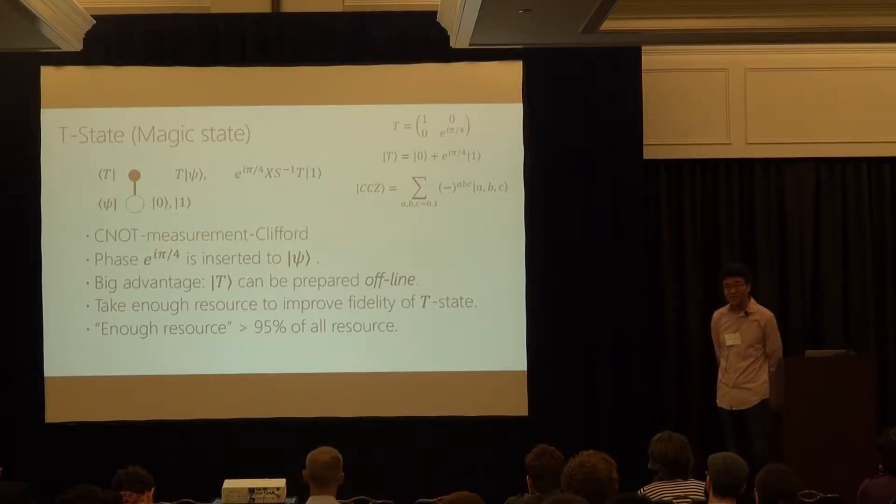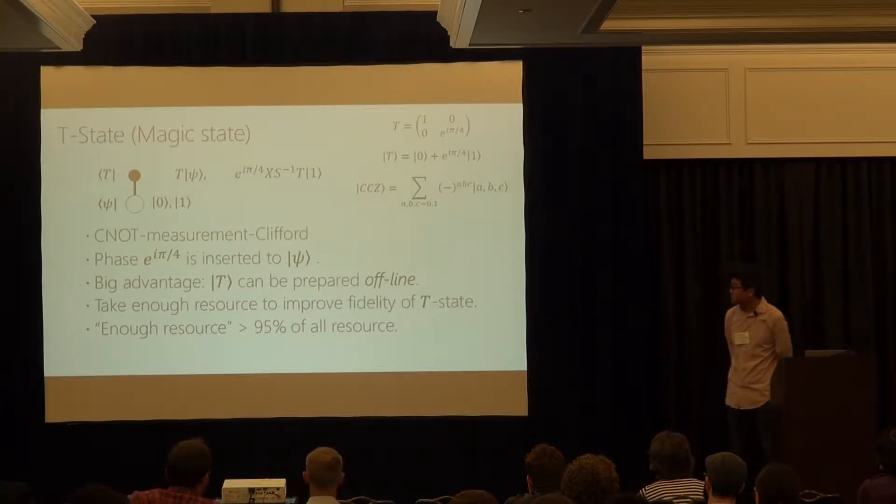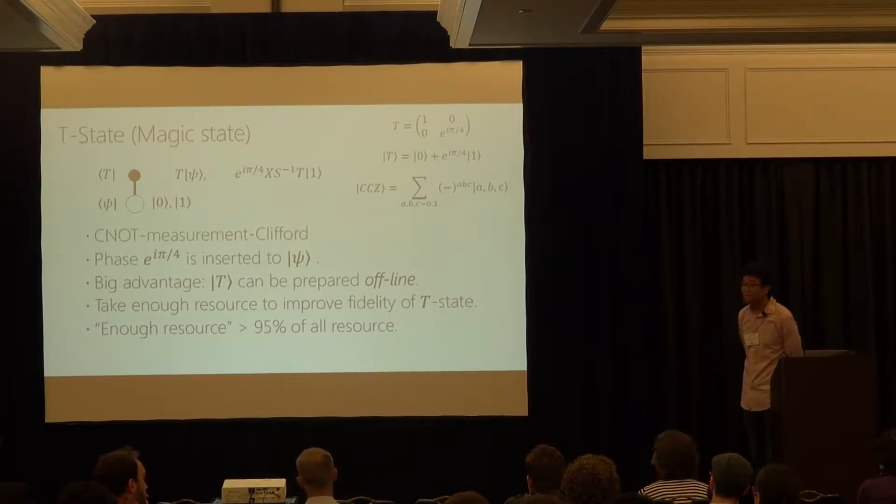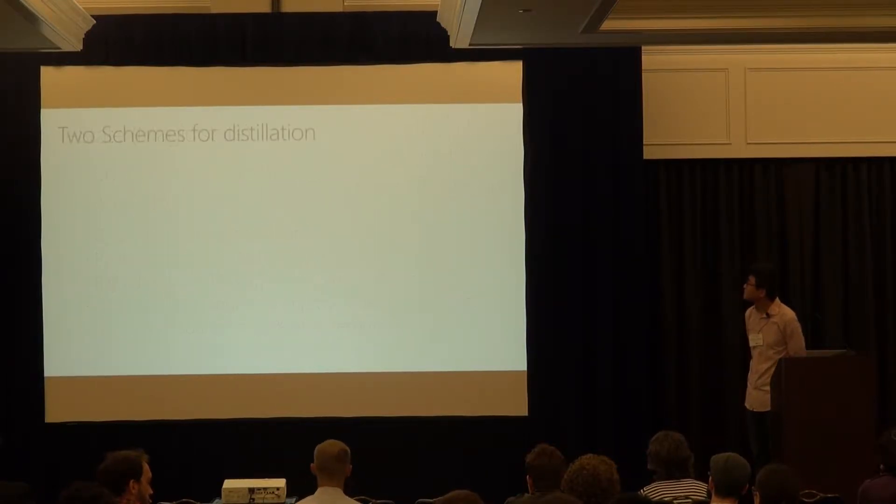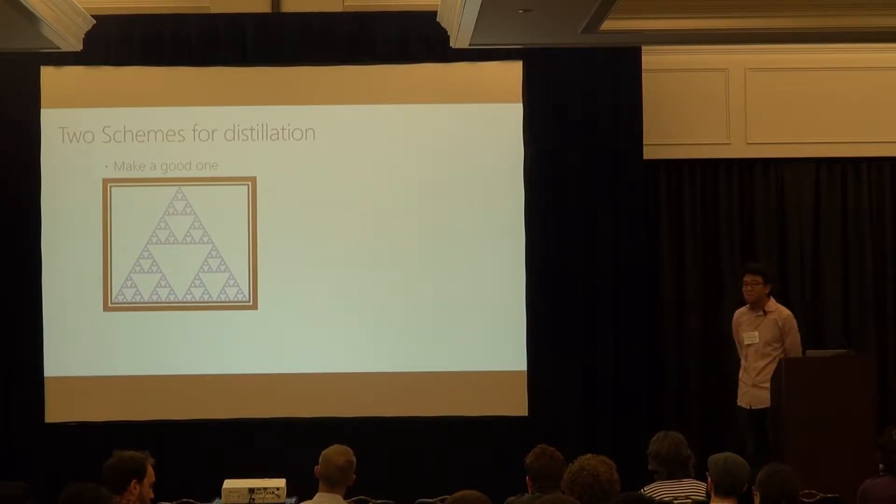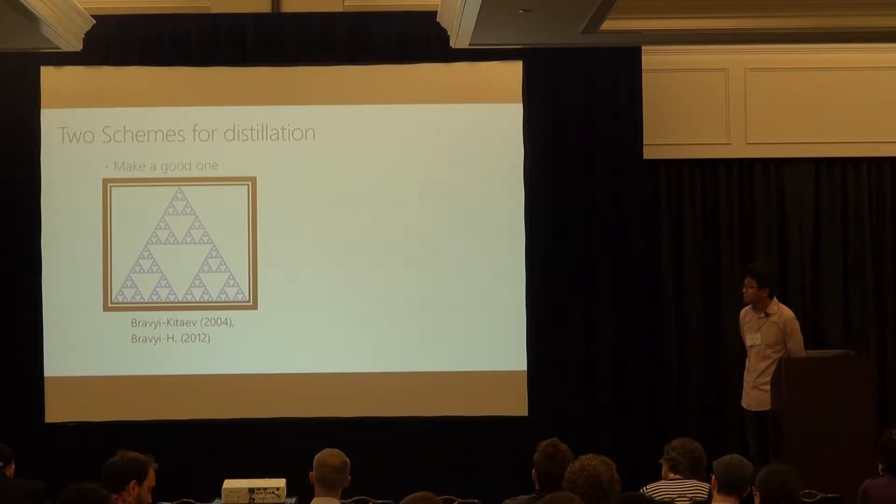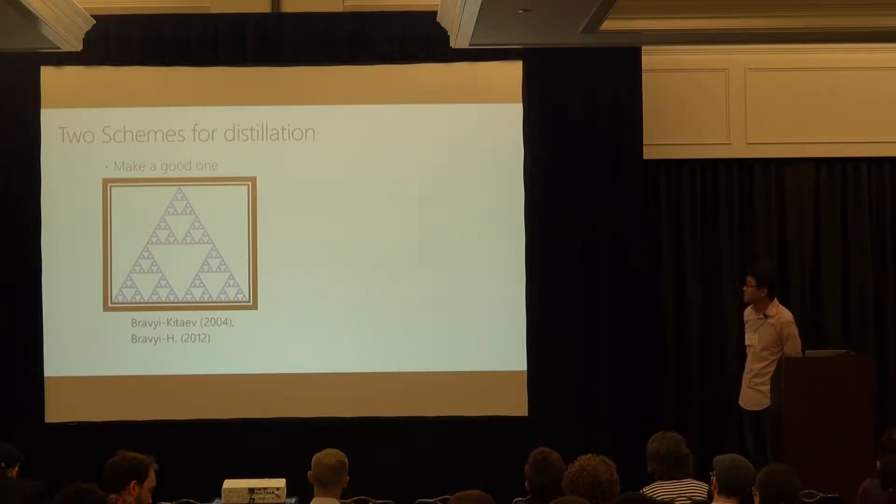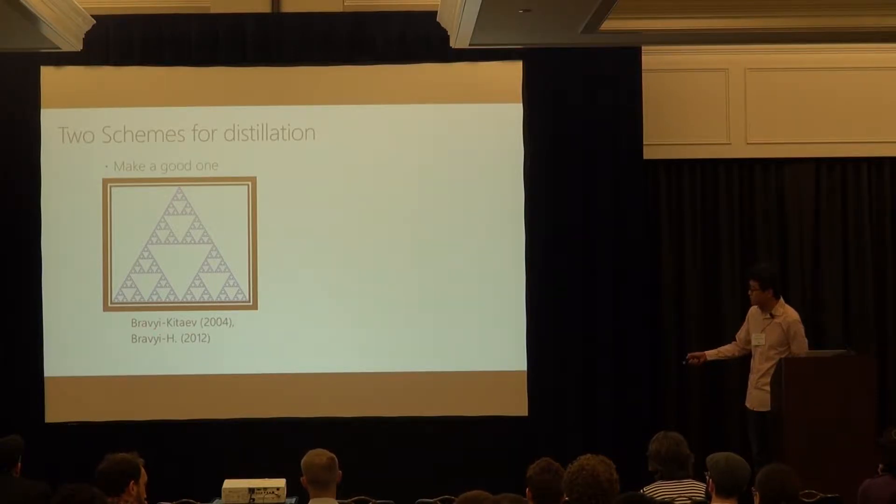And here, the enough resource in some estimate is estimated to be almost everything. So it is crucial to improve the efficiency of this part, the improvements of the magic state, and that's the distillation. There has been, generally speaking, two schemes for distillation. First one is, not necessarily the historically first one, but most often talked about, is to make a good one out of bad ones. First noted by Bravyi and Kitaev in 2004, and later, slight improvements we have obtained, I will mention later.